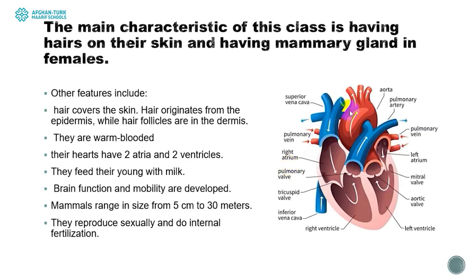About their heart structure, we can see that they have a four-chambered heart. It means their heart has four cavities — two atria and two ventricles. They have a closed circulatory system, so blood is not coming out from their heart and blood vessels. Blood is always circulating inside their blood vessels and heart.